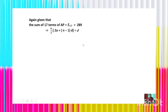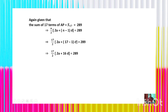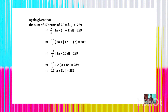Similarly, given S₁₇ = 289. Using the formula: (17/2)[2a + 16d] = 289. Taking 2 as a common factor: (17/2) × 2 × (a + 8d) = 289. After cancellation: 17(a + 8d) = 289, so a + 8d = 289/17 = 17. This gives equation 2: a + 8d = 17.